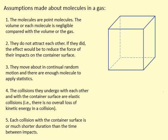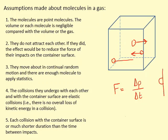The final assumption is that each collision with the container is of much shorter duration than the time between impacts. This relates to the equation: force equals rate of change of momentum, i.e., change in momentum over time. This time should technically be the contact time with the wall, but that's too difficult to use. Instead, we use the time it takes for the particle to hit one wall, bounce off, hit the other wall, and come back — basically the time to travel two times the length of the container. This makes our calculations much easier.